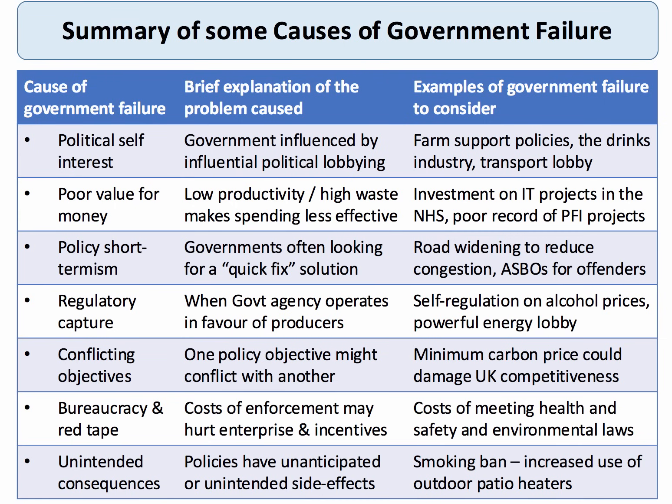Unintended consequences are important to cover — any single intervention has at least one. Take the smoking ban in public places, which I consider one of the most important pieces of legislation in the last 50 years. One unintended consequence is the tremendous increase in outdoor patio heaters, which is arguably environmentally damaging. Government failure is a natural feature of intervention, but top students assess whether it's truly significant. In this case, the benefits of the public smoking ban far outweigh the environmental cost of outdoor patio heaters.